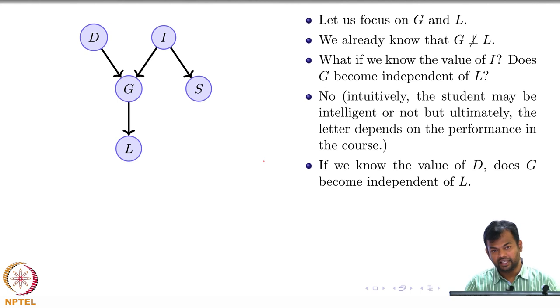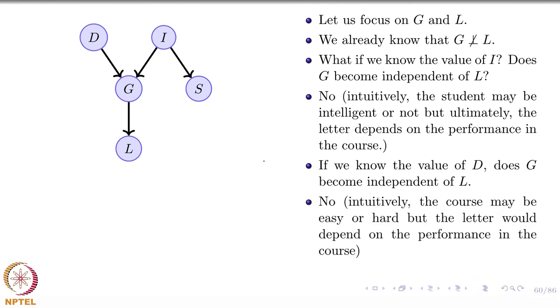If we know the value of D, does G become independent of L? No, again the same argument, right? The same thing, that the course is hard or difficult, but once you know the grade, that is completely what is going to determine the letter. Even if you know the difficulty of the course, nothing is going to change.